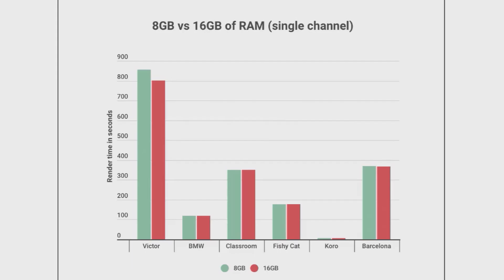The final result is what we originally tested in the first video: upgrading from 8 to 16 gigabytes of RAM to see if it made any difference to render times. Across most benchmarks it does not — this closely mimics our first test results. The only benchmark that showed a difference was Victor, because its total scene data is about 12 gigabytes. That's more than 8 gigabytes, so the 8GB test had the CPU moving data out of memory to make room for the scene, slowing it down by about 55 seconds.